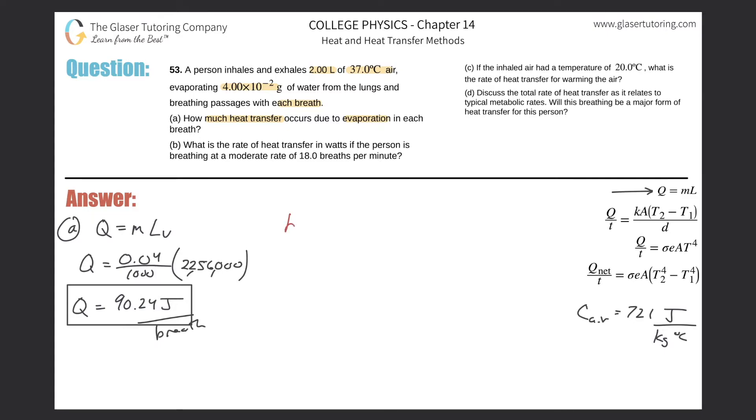So let's take a look at now letter B. What is the rate of heat transfer in watts now? They asked us specifically for a unit, so that's great. I will calculate watts if the person is breathing at a moderate rate of 18 breaths per minute. Well, if this is now, we can do this in a couple of ways. We can find the total amount of energy. So if this represents the total amount of energy per breath, right?